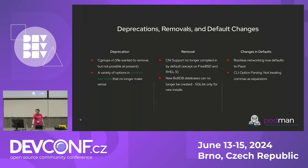Finally, we changed rootless networking from Slirp4netns to Pasta. We need a networking tool for rootless operation to do user-mode network forwarding since we don't have access to iptables or nftables. Pasta is a drop-in replacement for Slirp4netns but with substantially higher performance — a natural fit. We also did some substantial changes to CLI option parsing that hopefully no one will notice; no bug reports so far, so I'm optimistic.